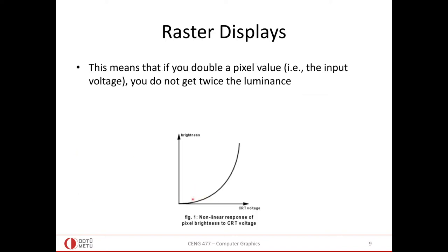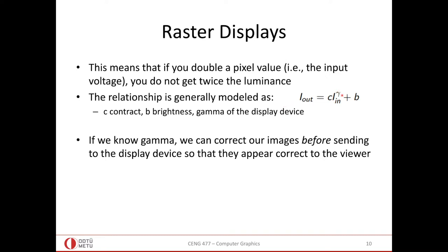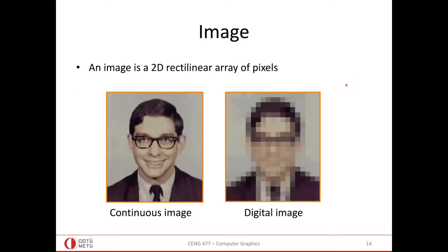Since human eyes are more sensitive at lower brightness values, even if the input pixel value is doubled we keep the displayed brightness low, because we are good at separating low-brightness values. As the pixel intensity increases you should increase brightness, but it will not be linear. This is the idea of gamma correction — a non-linear, exponential function where gamma is 2.2.